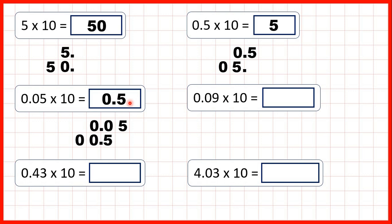Notice our results so far. When we had 5 ones and multiplied by 10, we got 5 tens. When we had 5 tenths multiplied by 10, we got 5 ones. And when we had 5 hundredths and multiplied by 10, we got 5 tenths. That's because when we multiply by 10, digits move 1 place value to the left — because when you have 10 of something, you have the place value to the left.